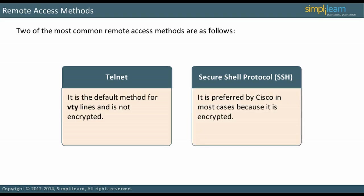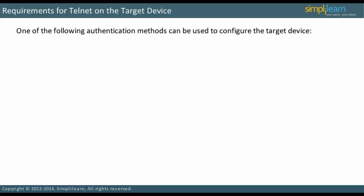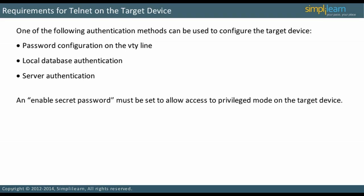Let us discuss the requirements for Telnet on the target device. The target device must be configured with one of three authentication methods: configuring a password on the VTY line, local database authentication, or server authentication — for example, RADIUS can be configured. An enable secret password must also be set on the target devices.